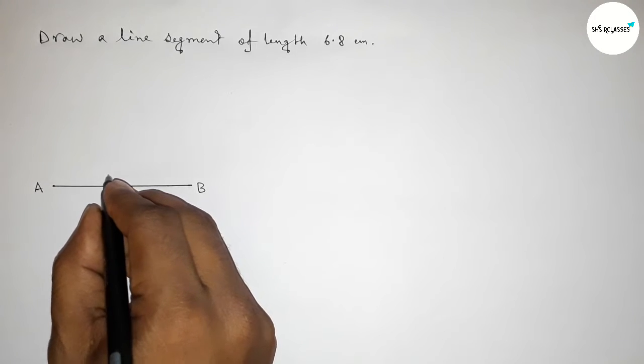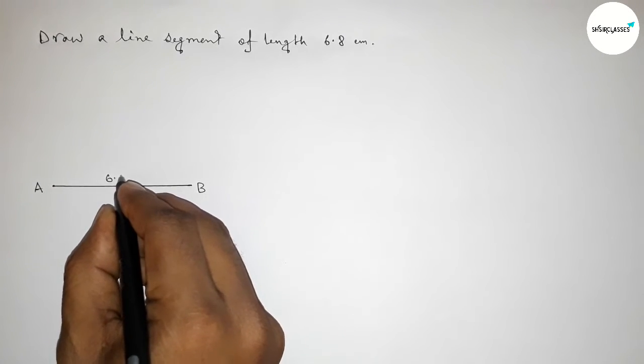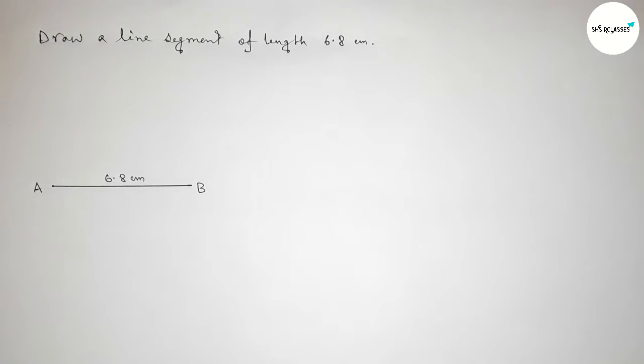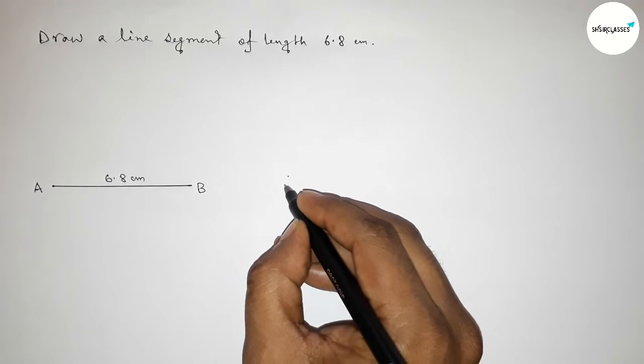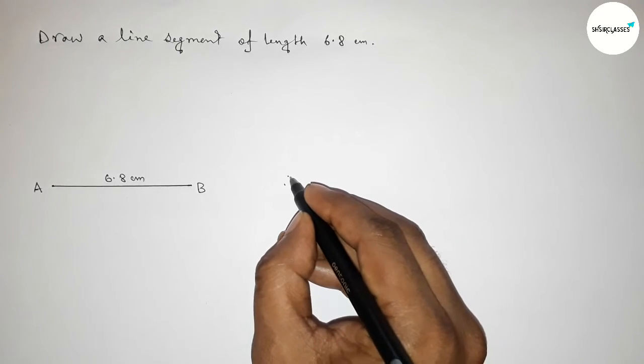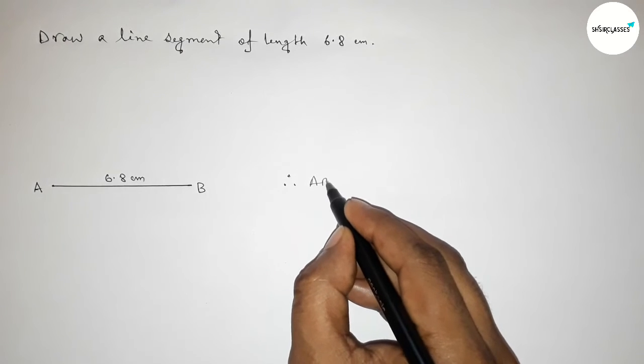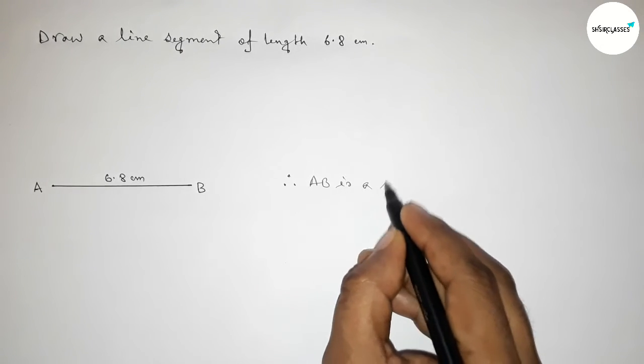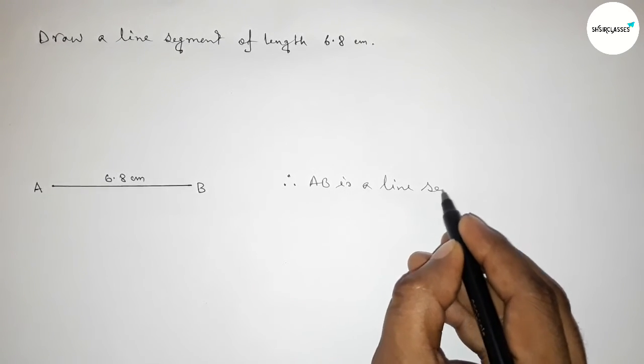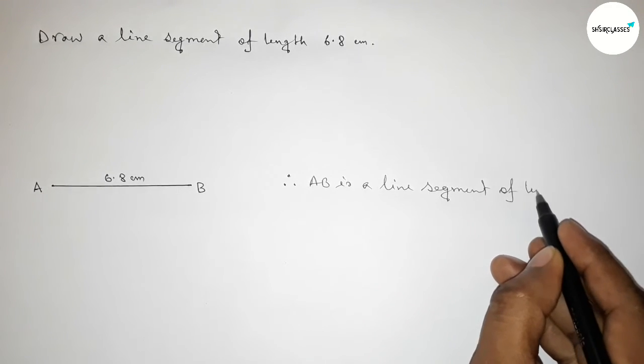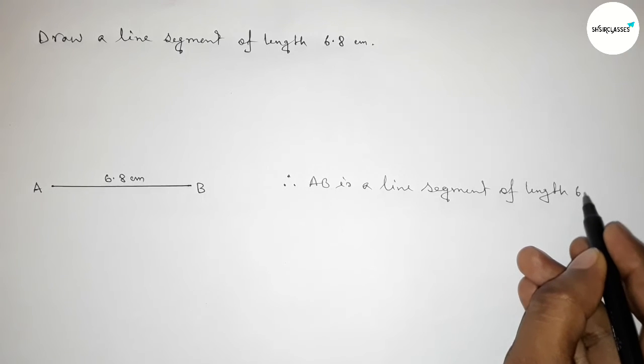Therefore, AB is a line segment of length 6.8 centimeters, and you can draw this line with the help of a scale.